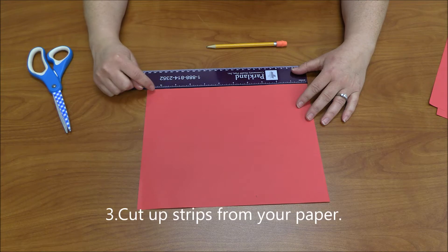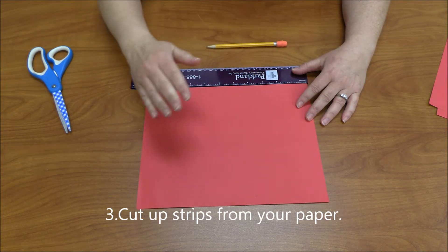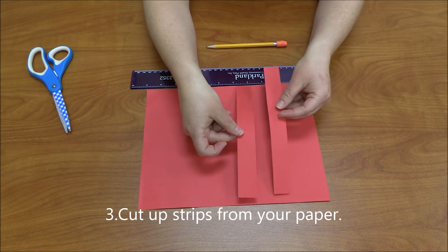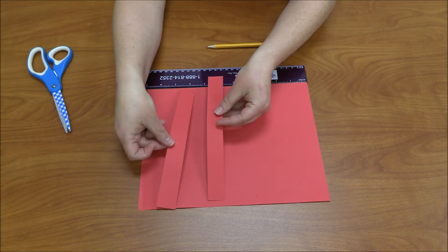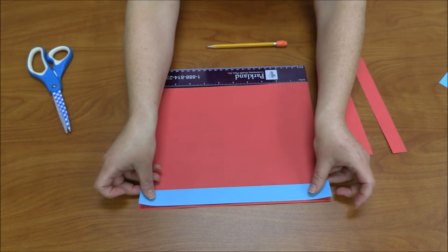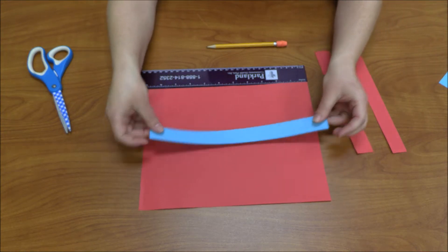I cut along the shorter side, but you could also cut along the longer side if you want and see what happens when you try either one of those measurements. Then I cut out all my strips.